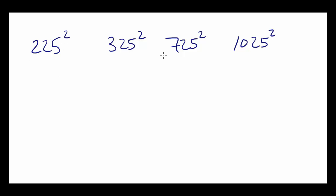Let's attempt to find the square of these numbers in our head. Let's look at the first one, 225. What you're going to do is focus on the first digit of the number. In this case, that's 2.